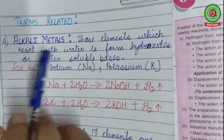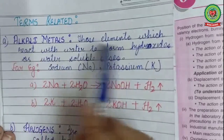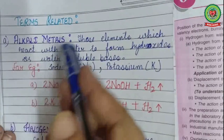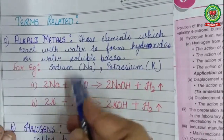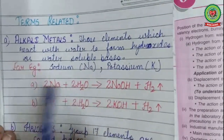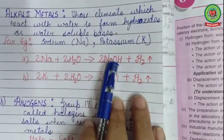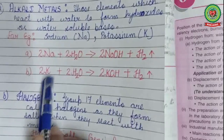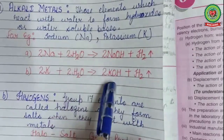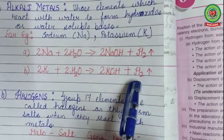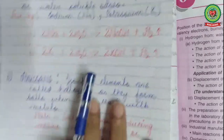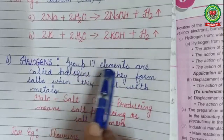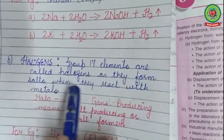Let's first cover the terminology. Alkali metals are those elements which react with water to form hydroxides, or water-soluble bases. For example, sodium reacts with water to form sodium hydroxide with the release of hydrogen gas. Similarly, potassium reacts with water to form potassium hydroxide, again with the release of hydrogen gas.